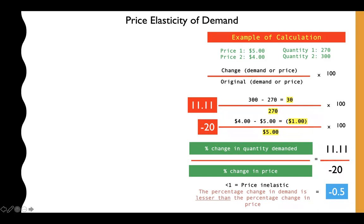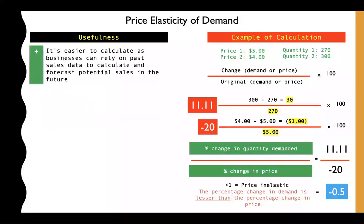Negative 0.5 is less than one, so this is price inelastic. This means the business can slowly increase prices in the future without greatly affecting demand. However, it's important to note that if the business keeps increasing prices, customers may pick up on it and feel manipulated, which could eventually shift demand from inelastic to elastic.